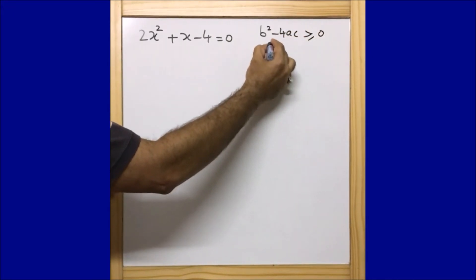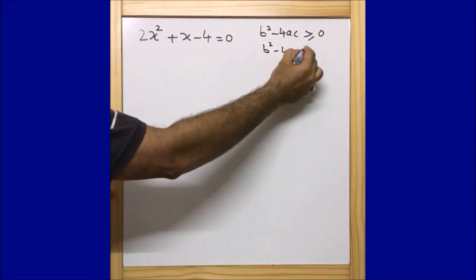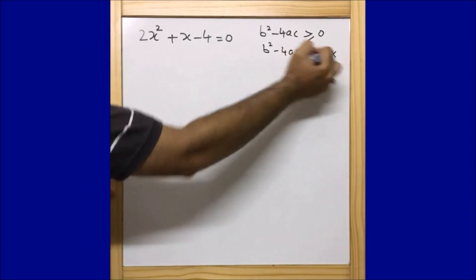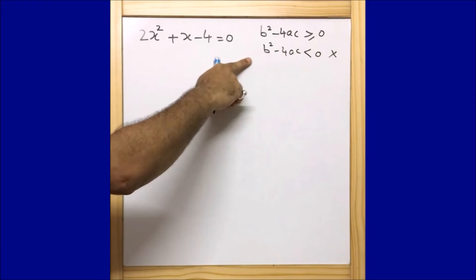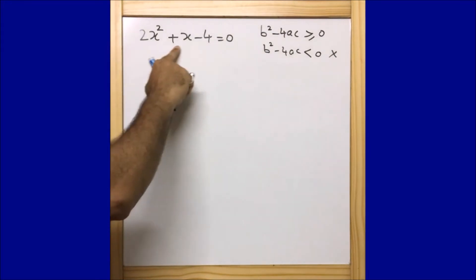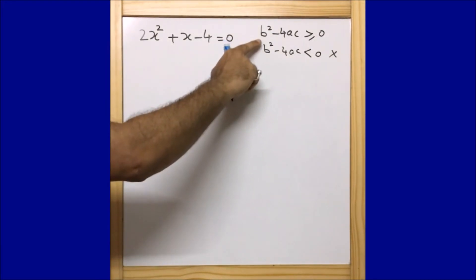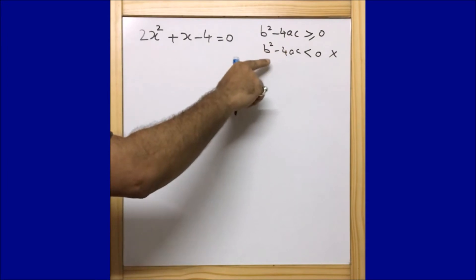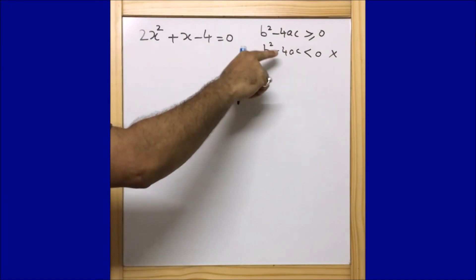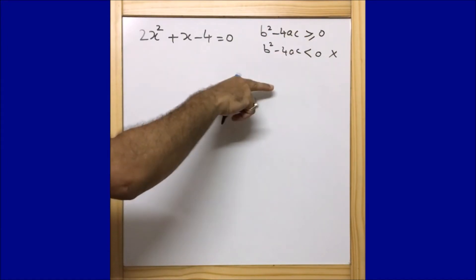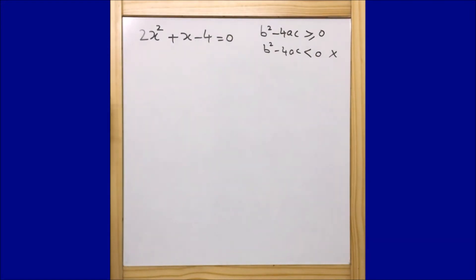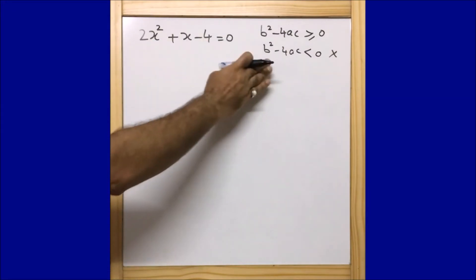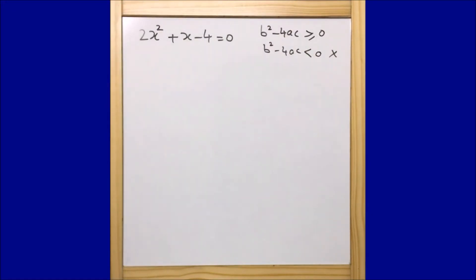If b² - 4ac is less than 0, then the roots of this quadratic equation do not exist. So quickly in the exam, we should find the value of b² - 4ac. If it is less than 0, we stop and say the roots are not possible since b² - 4ac is less than 0.